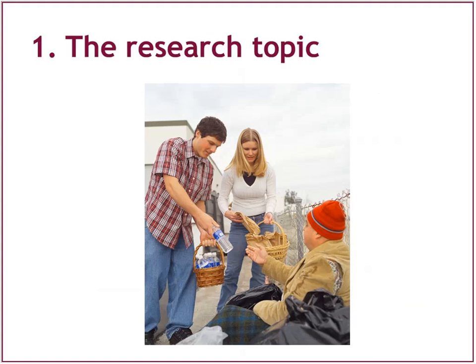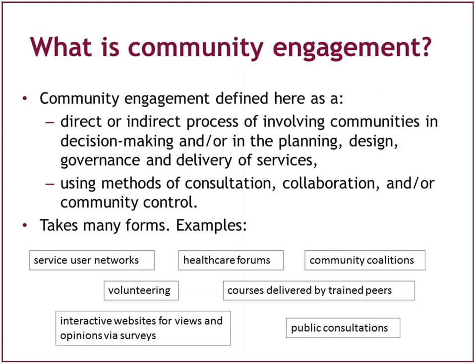We define community engagement as a direct or indirect process of involving communities in decision making and/or in the planning, design, governance and delivery of services — using any combination of methods of consultation, collaboration or community control. That is quite a broad definition. Community engagement can therefore take many forms. Some examples include community coalitions, peer delivery of interventions, and public consultations.